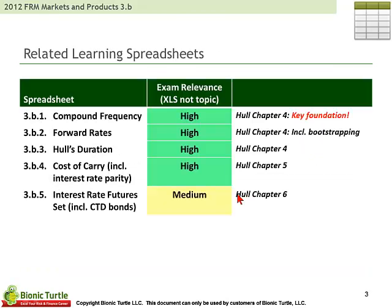So, four key chapters from the very important John Hull. And as usual, I have learning spreadsheets — fully five associated with this particular video. The first four that I've tagged as highly relevant if you're using spreadsheets to complement your learning. 3B1 is compound frequency. I consider this a key foundation — the ability to translate discrete to continuous rates of return and vice versa. 3B2 is also key: the extraction of forward rates from spot rates.